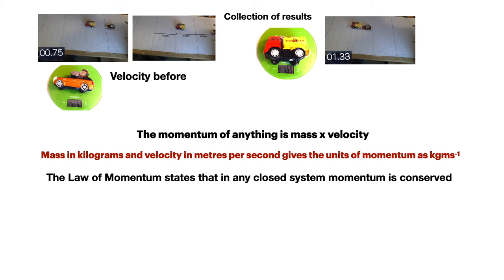So near the top of the screen we'll calculate the velocity before. That's going to be the distance traveled divided by the time, which to three significant figures—0.25 divided by 0.75—is 0.333.